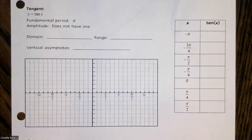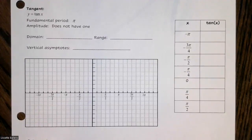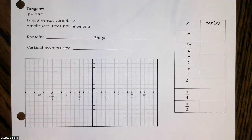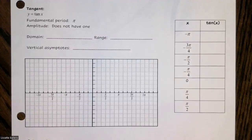Today we're going to graph the tangent and cotangent graphs — our last two of the trig functions. We graphed sine and cosine first, then cosecant and secant. All four of those had a period of 2π. Now we're going to focus on the tangent and cotangent.